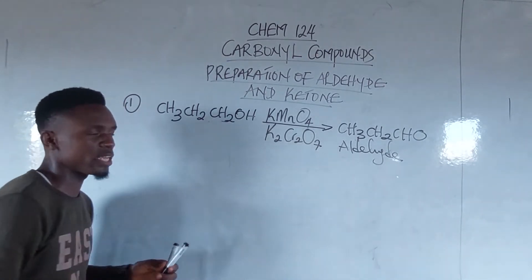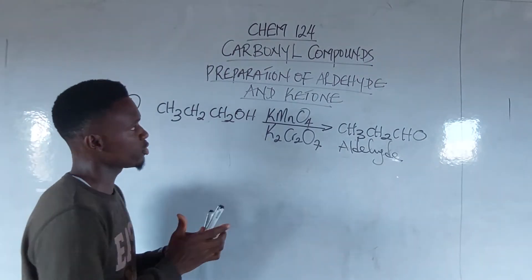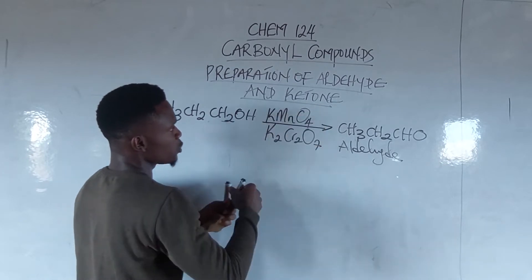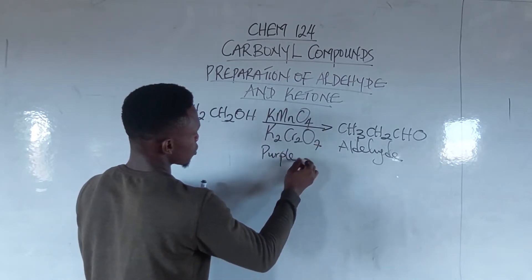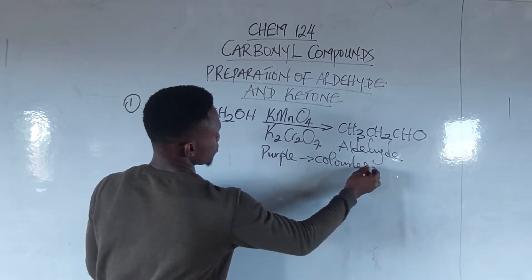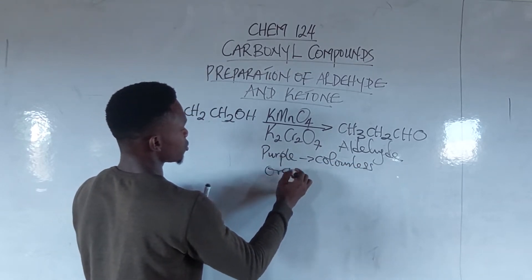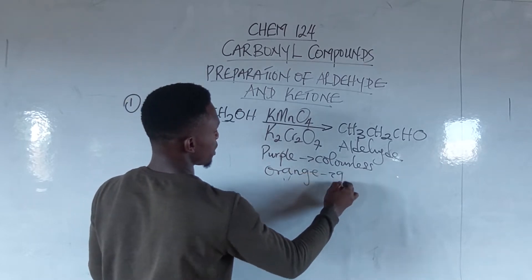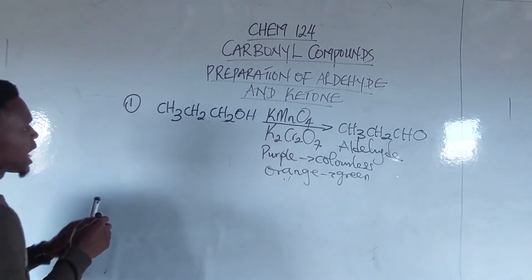Take note of this: during oxidation using potassium permanganate as the oxidizing agent, the color changes from purple to colorless. Using potassium dichromate, it changes from orange to green.